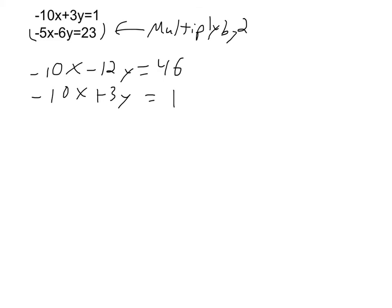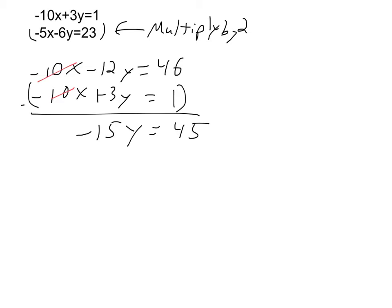Subtracting is trickier than adding because I have to distribute the negative. I bring down the first equation: negative 10x plus 3y equals 1, and subtract. Negative 10x minus negative 10x cancels out by design. Negative 12y minus 3y, paying attention to that negative, gives negative 15y. On the right side, 46 minus 1 equals 45. So I have a one-variable equation: negative 15y equals 45. Dividing by negative 15, I get y equals negative 3.